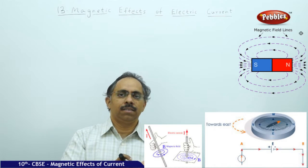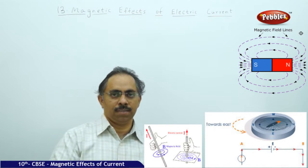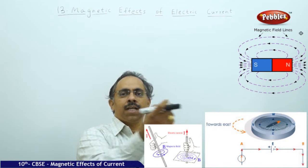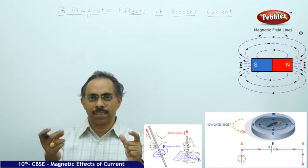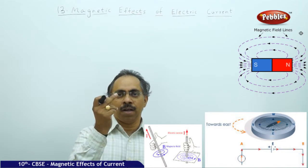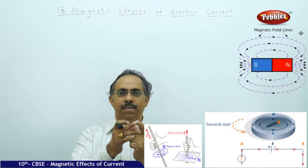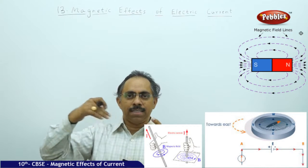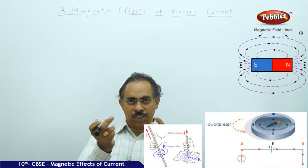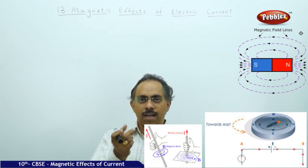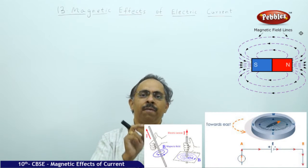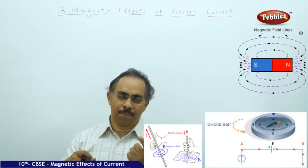If I take an ordinary bar magnet and hold a compass near it, moving the compass around the bar magnet, I can see a change in the direction of the needle. This is because the small compass needle is in the presence of the bar magnet's magnetic field, which has different values and directions at different locations surrounding the bar magnet. So we can observe the direction of the magnetic field at each location, though we cannot judge the strength.